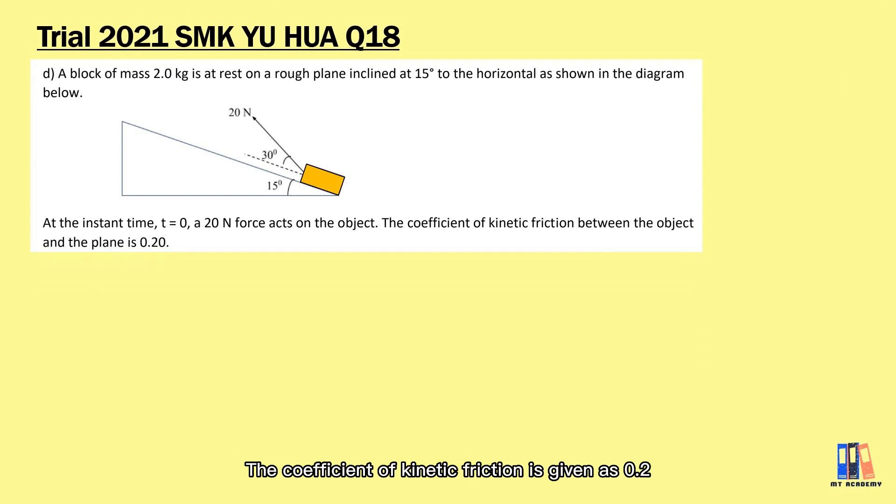There's 20 newton force acting on the object to move it up the plane. Coefficient of kinetic friction is given as 0.20. Refer back to our previous discussion on friction, we need to identify the reaction force to calculate the friction force. Before that, let's draw a free body diagram.